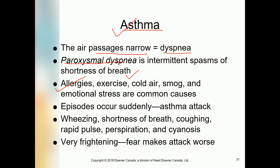Asthma attacks occur suddenly. The person has difficulty breathing and becomes panicked with wheezing, shortness of breath, coughing, and rapid pulse. Diaphoresis (sweating) occurs and the person may develop cyanosis — a blue color due to lack of oxygen in the blood. Cyanosis means the person is called cyanotic. It is a very frightening condition, and fear makes the attack even worse.